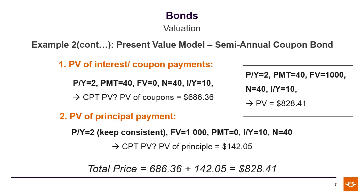Using our financial calculator and doing the present value of coupon payments separately from the principal payment, we once again end up with $828.41. But if you look on the right-hand side, you'll see that it's possible to do this calculation in one go, and you will still end up with $828.41.